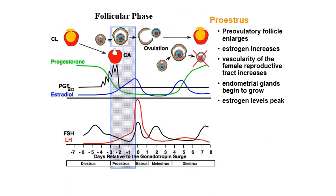Proestrus belongs to the follicular phase because the pre-ovulatory follicle enlarges during this time. In terms of hormone levels, there is an increase in estrogen, which is important for increasing the vascularity of the female reproductive tract. The endometrial glands also begin to grow and estrogen levels peak at this time.